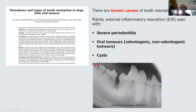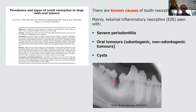There are known causes of tooth resorption, mainly external inflammatory resorption. These include severe periodontitis, oral tumors — odontogenic or non-odontogenic such as fibrosarcoma and squamous cell carcinoma — and cysts. In this radiograph, resorption of tooth 410 and a small resorptive lesion in the root of tooth 409 are visible, caused by a foreign body lodged in the area for several months.